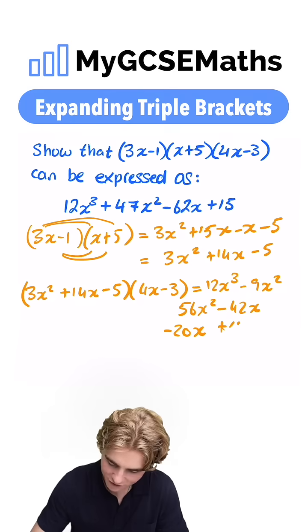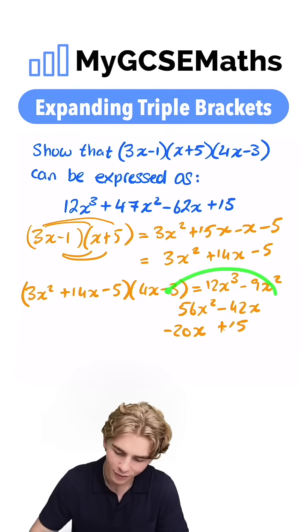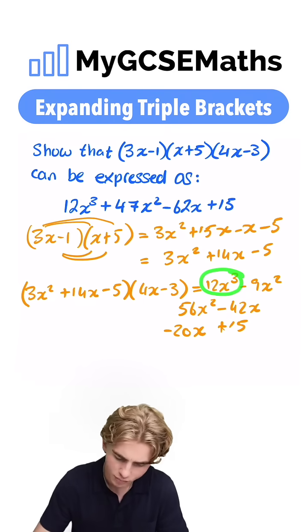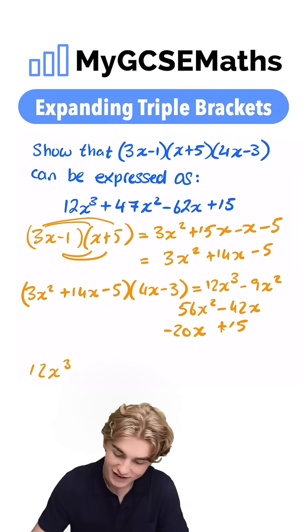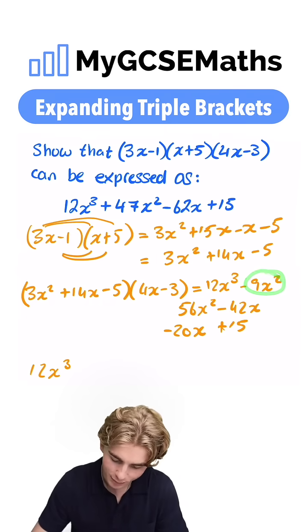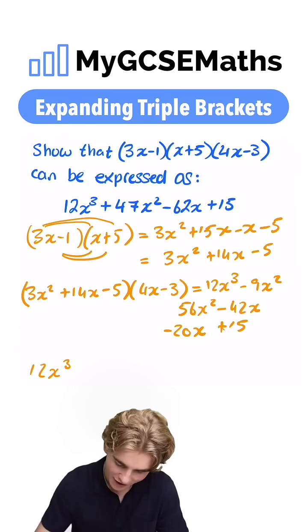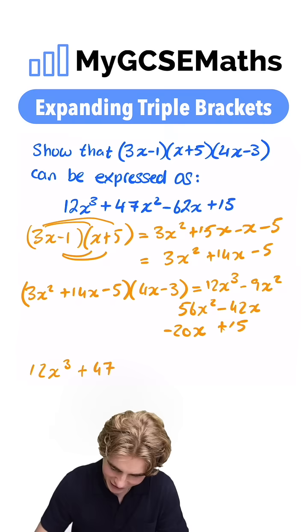Next, we're going to collect our like terms. We have one term in x cubed, so we have our 12x cubed. Next up, our terms in x squared, we have minus 9x squared plus 56x squared. 56 subtract 9 is 47, so we have plus 47x squared.